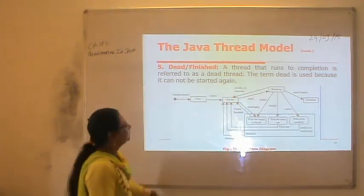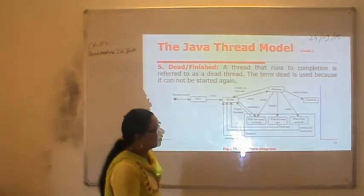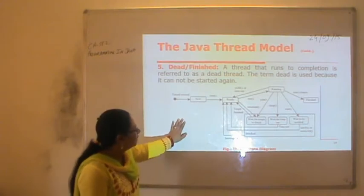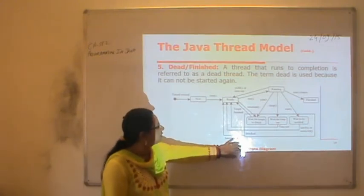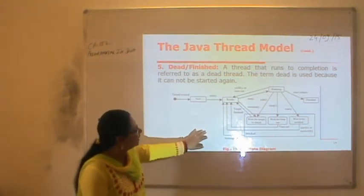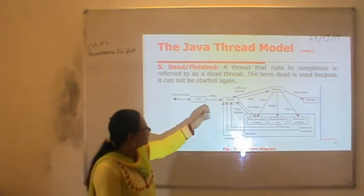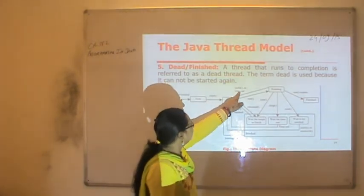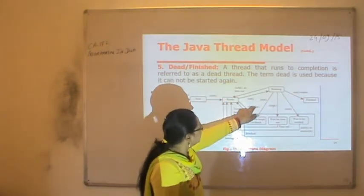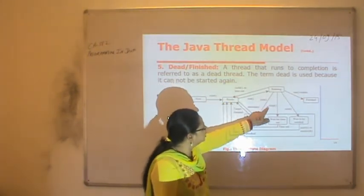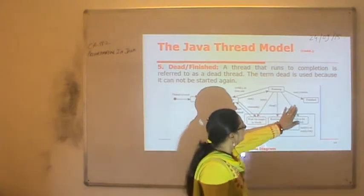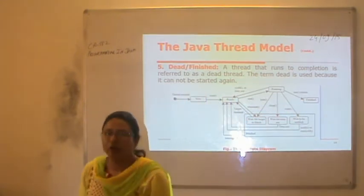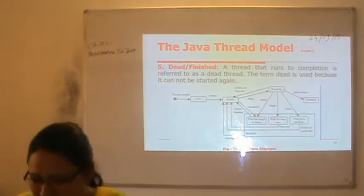There are a number of methods in Java used for completing the thread lifecycle: start, yield, interrupt, run, join, sleep, and wait. These are the different methods you can use for implementing threads.